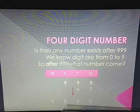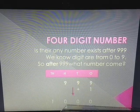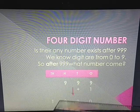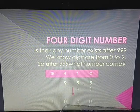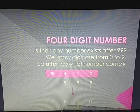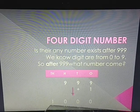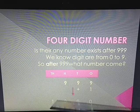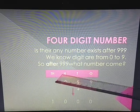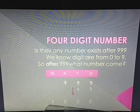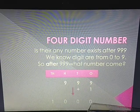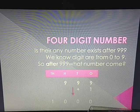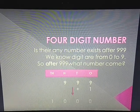Now, this 10 can't be placed together in the hundreds place, as every place value will take only one digit. So we will separate this 10 as 1 in the thousands place and 0 in the hundreds place. Thus, 1000. This is how the first four-digit number 1000 is formed.